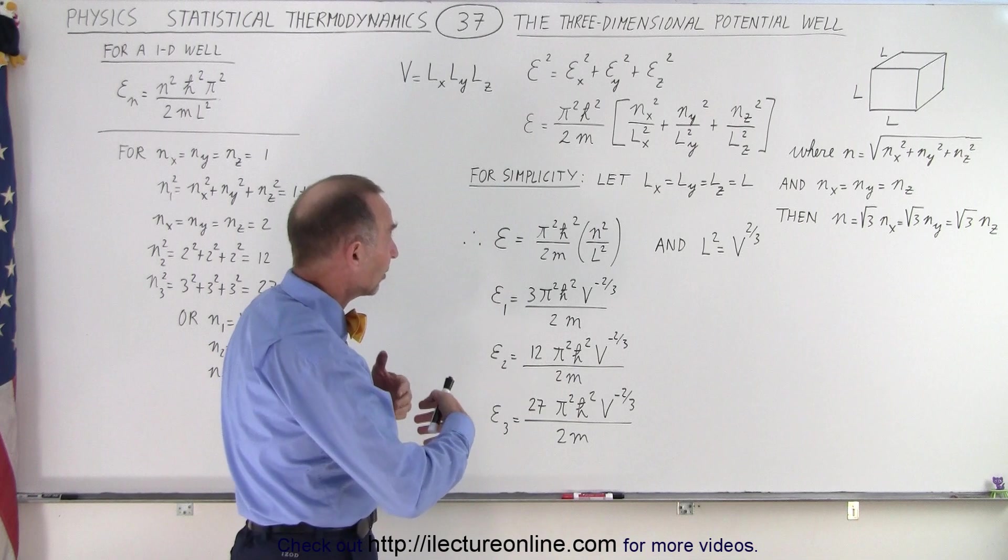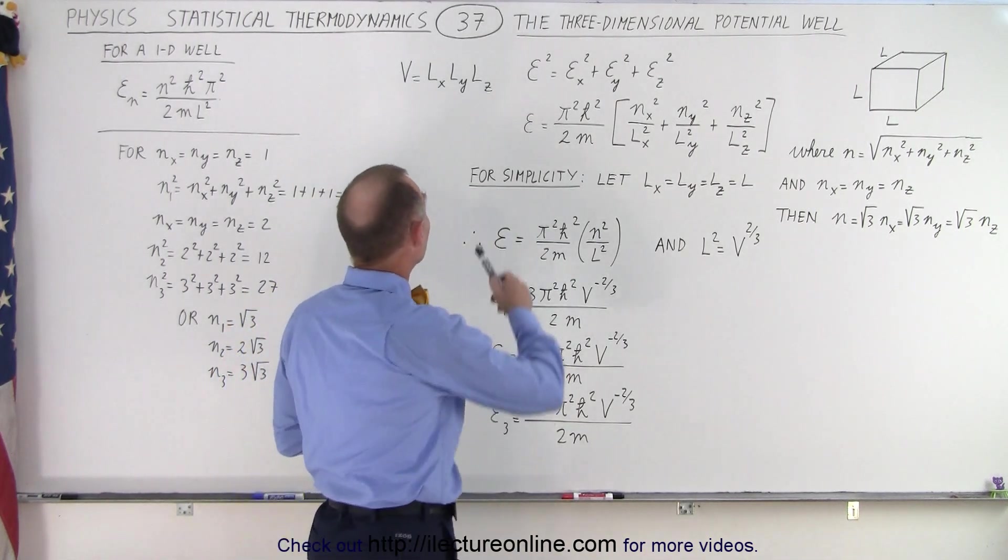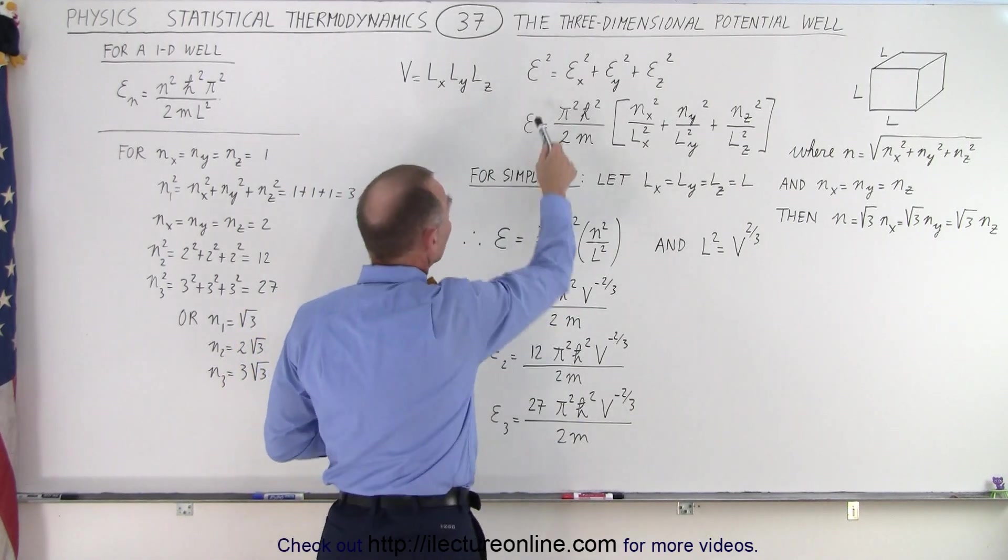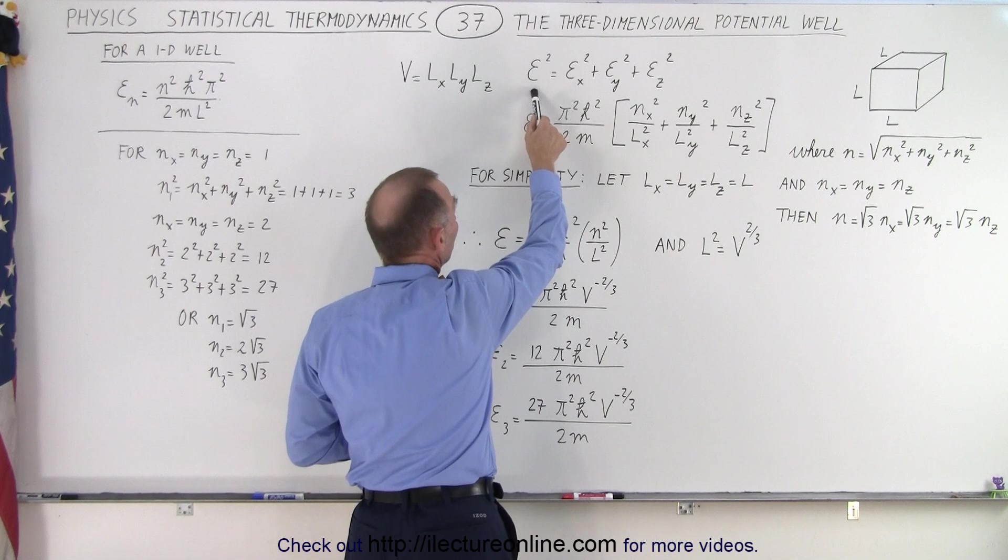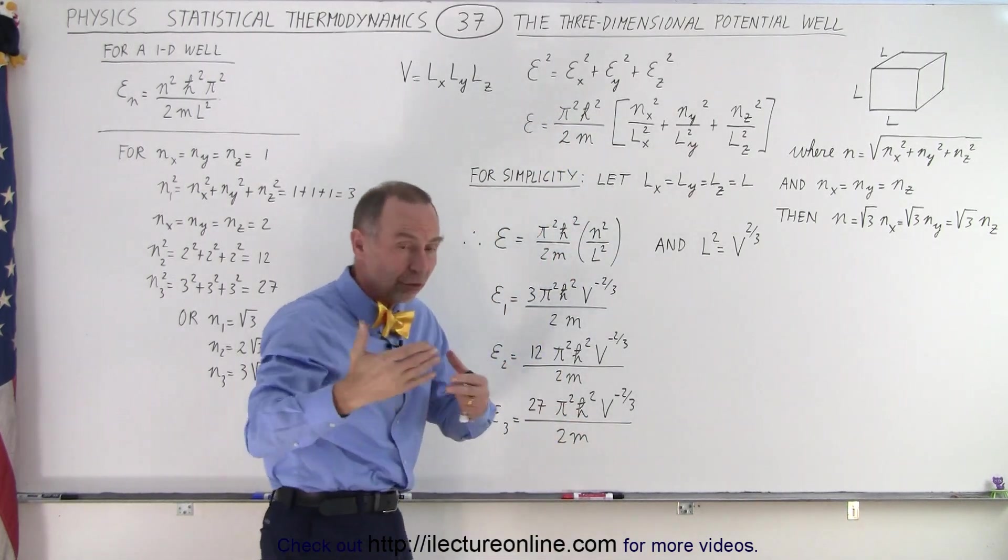So we're going to put a set of particles inside a volume. And notice that the volume will simply be, of course, the product of the three sides. And the energy can be expressed in terms of energy squared being equal to the sum of the energies in each direction squared. Because, of course,